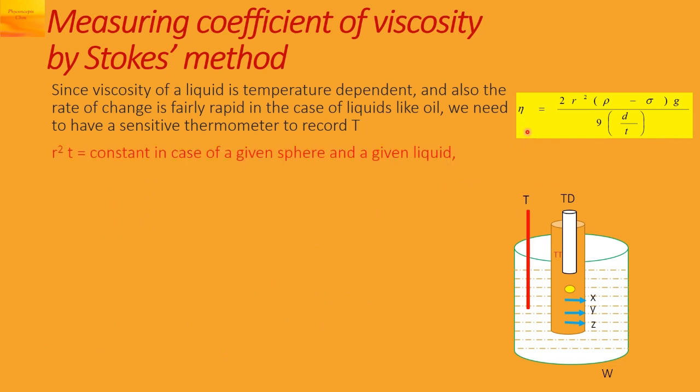If we observe this formula and rearrange it such that t comes in the numerator, we get r²t. So r²/t will be a constant for a given sphere and a given liquid, provided the temperature T is steady.